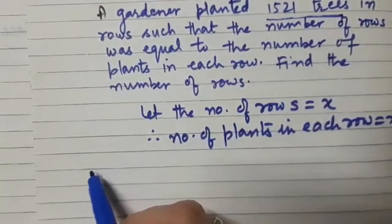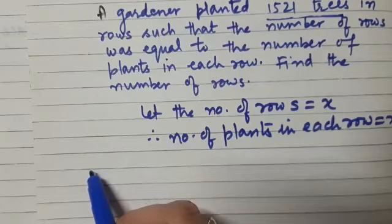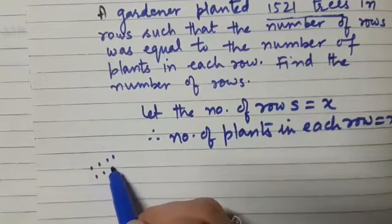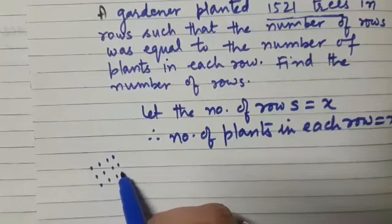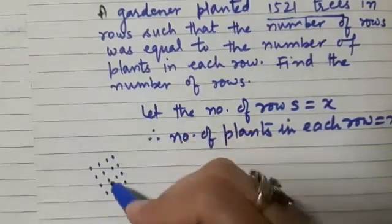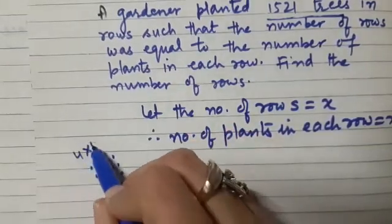Say, for example, I have four plants in four rows. So, how many total plants are there? That is four into four.